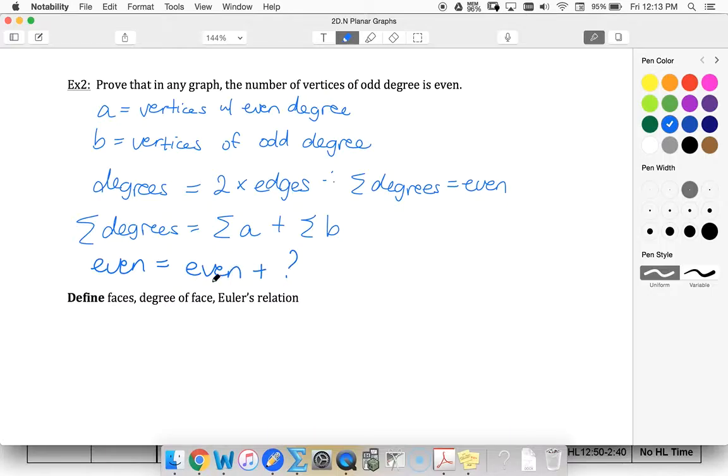Well, if I have an even number, the only way to make a sum that ends up being even as well is if this value is even. If I added an odd number, my sum would be odd. So my sum of B degrees must be even, but each of my B vertices had an odd degree.